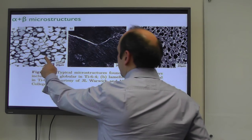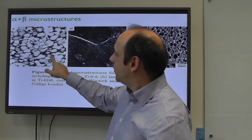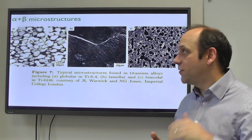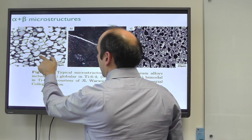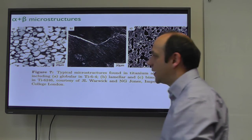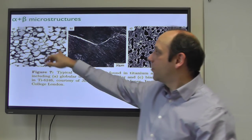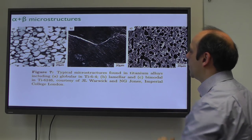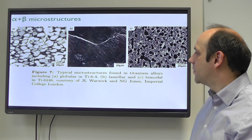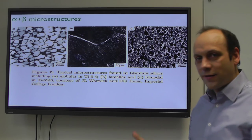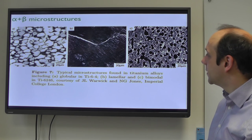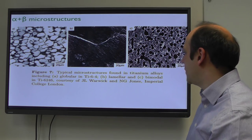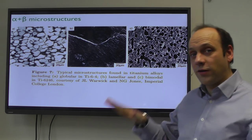An alternative microstructure is where we've managed to persuade the alpha to form into nice equiaxed grains of around 20 microns. This was done at a temperature in the alpha-beta phase field but with some alpha still to come out of solution on cooling, giving some plates in between. Processing higher in the alpha-beta field gives a lower proportion of what we call primary alpha. Notice the primary alpha appears black in the light micrograph but white in the SEM backscattered image - that's because the contrast mechanisms differ between the two techniques.